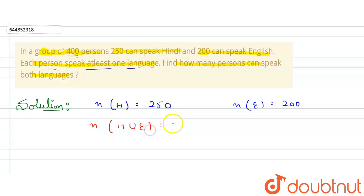These 400 people either will speak Hindi, either will speak English, or they will speak both. And what we need to find? We need to find how many persons can speak both languages.